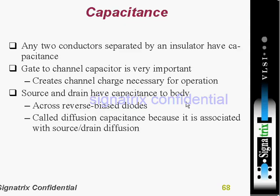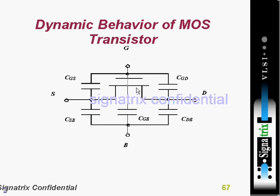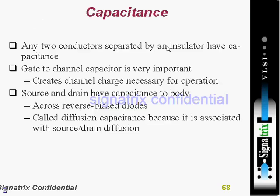Source and drain have a capacitance to the body — C_D-to-B and C_S-to-B, meaning with respect to bulk. This capacitance appears across a reverse-biased diode and is called diffusion capacitance because it is associated with the source and drain diffusion regions.